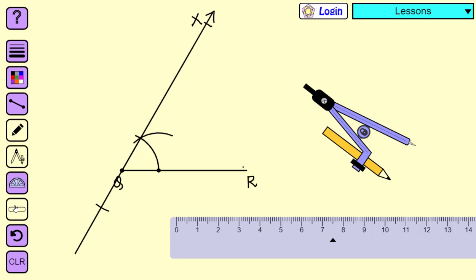Let us call it as point D. Length of QD is equal to 2 cm.